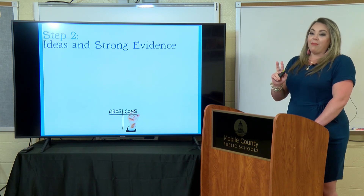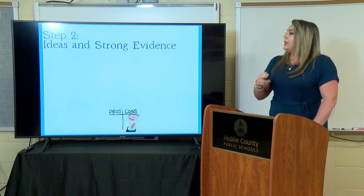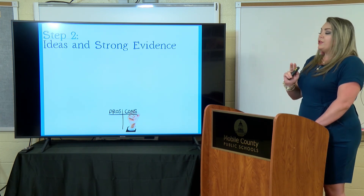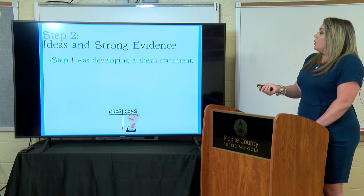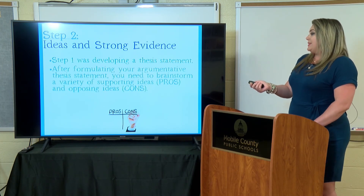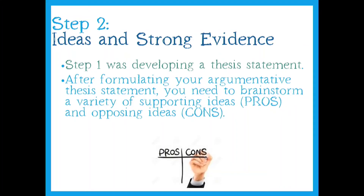Now that we know how to develop a thesis, let's talk about ideas and strong evidence to back it. After formulating your argumentative thesis, you need to brainstorm a variety of supporting ideas — pros and the opposing ideas, which are cons. You can make a T-chart at home or list them either way. This way you know what you have to write about. If you find yourself having a lot more pros, maybe you need to take that stance. If you find yourself easily developing the cons, maybe that's the side you should go with.